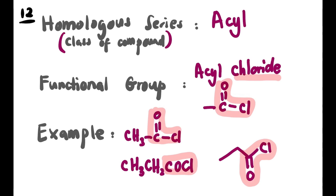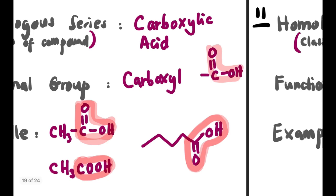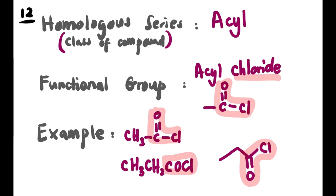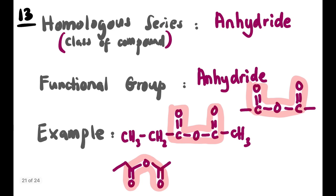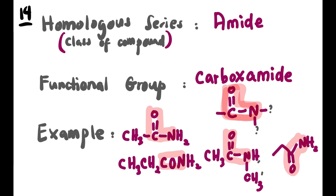Next is the acyl class of compounds. For example, acyl chloride has a C=O with Cl at the end — all derivatives of carbonyl. Circle C(=O)Cl each time. Then there is acid anhydride, with functional group C=O–O–C=O (two carbonyls connected by an oxygen). Moving on, amide has functional group carboxamide: C=O with N attached, regardless of whether H₂ or CH₃ is on the nitrogen. Circle and label C(=O)N.